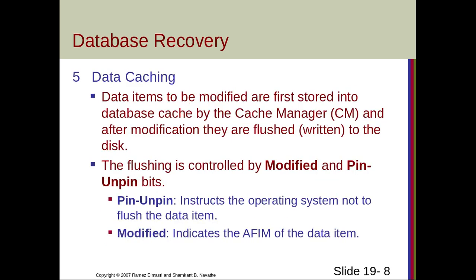Data caching means data items to be modified are first stored into the database cache by the cache manager, and after modification they are flushed to the disk. Flushing is controlled by modified and pin-unpin bits. The pin-unpin bit instructs the operating system not to flush the data item when it is set. The modified bit, when set, indicates the after image of the data item — meaning some modification has been done.